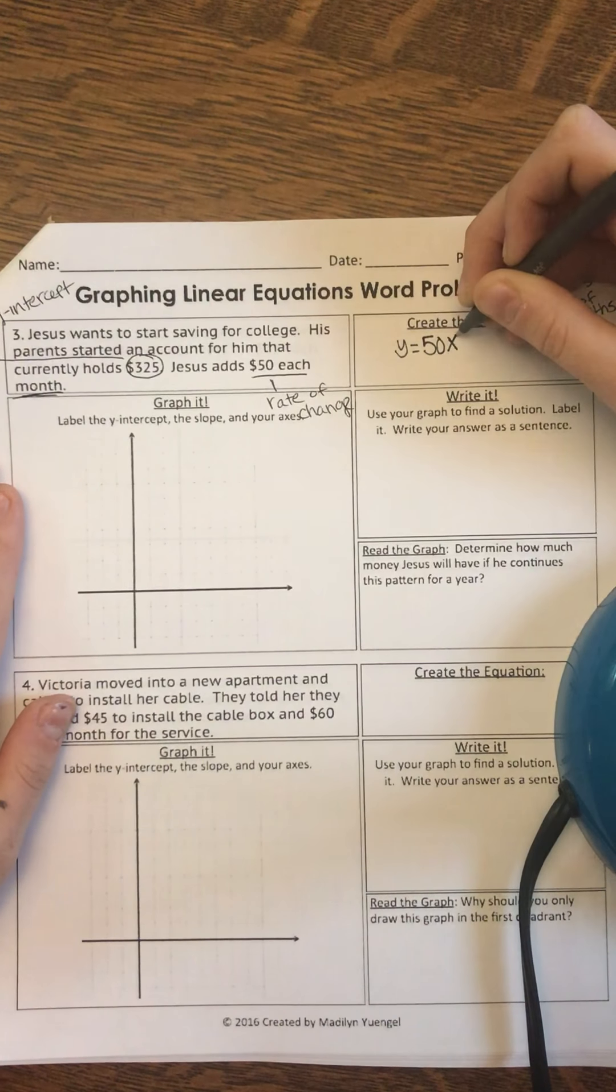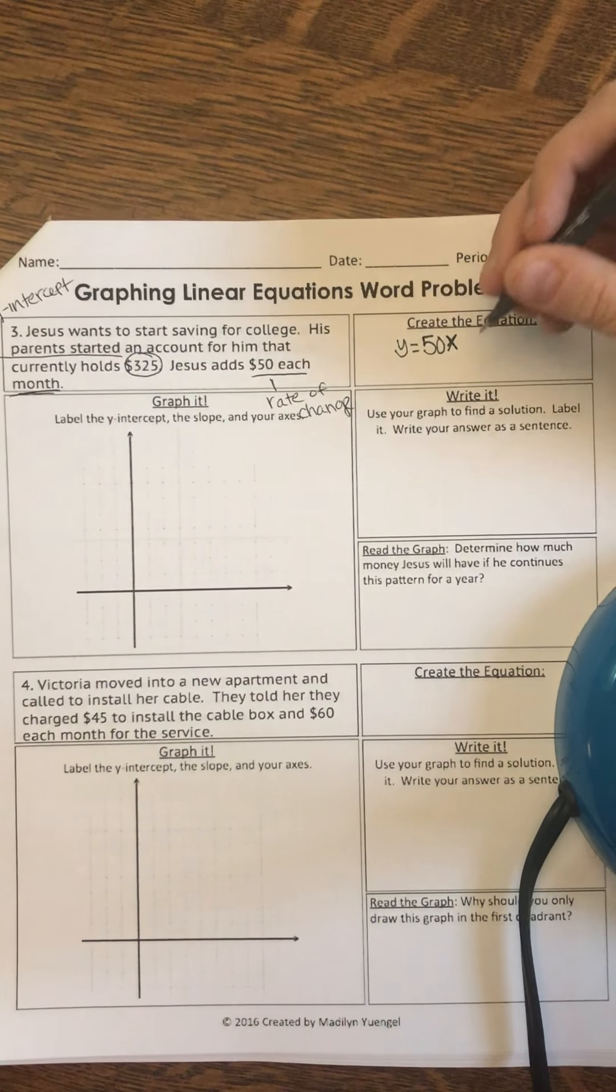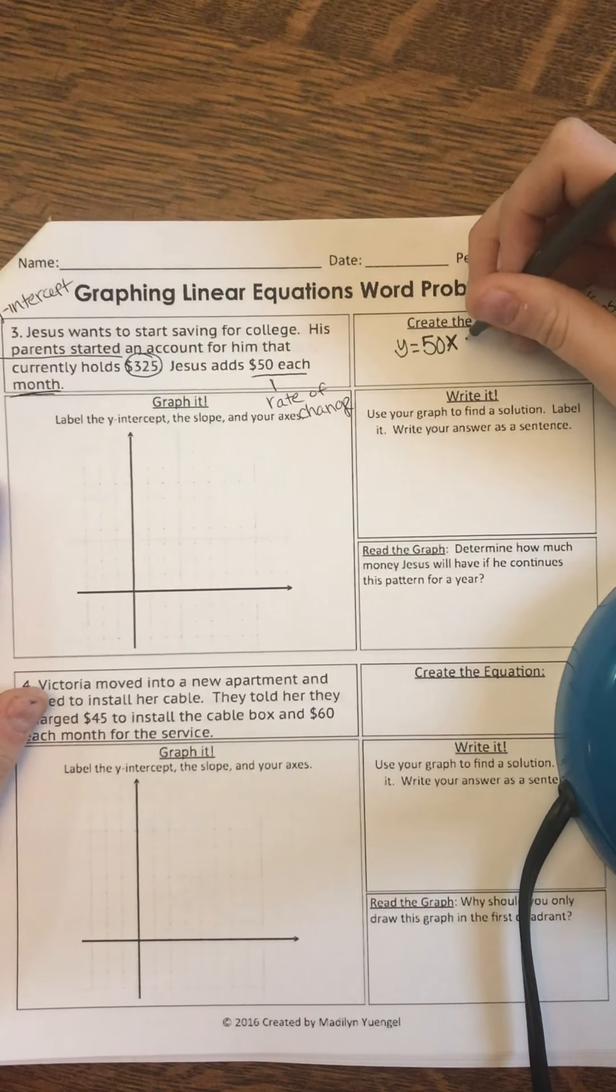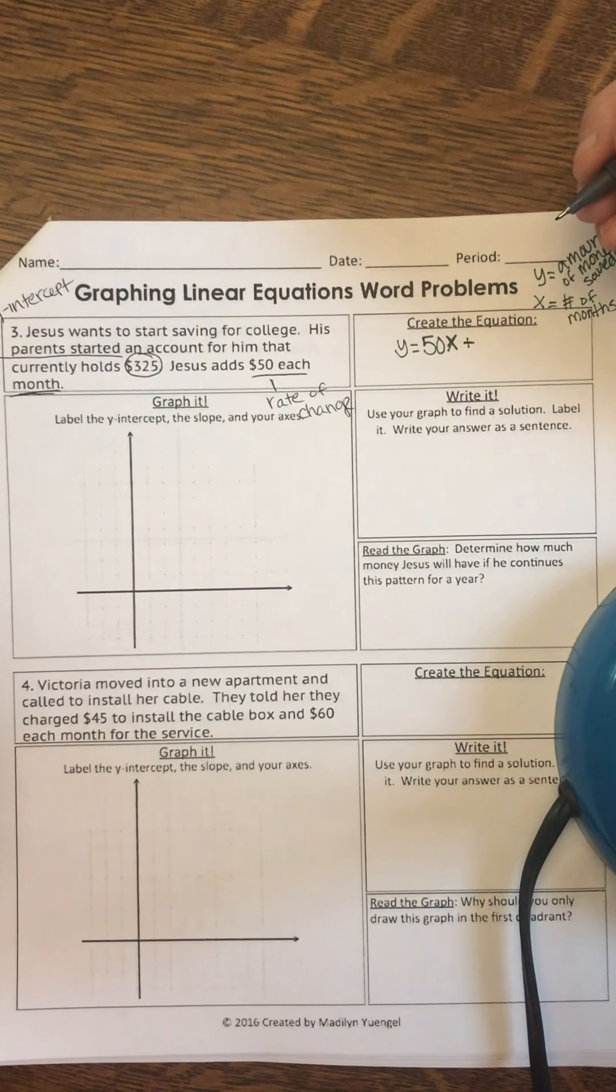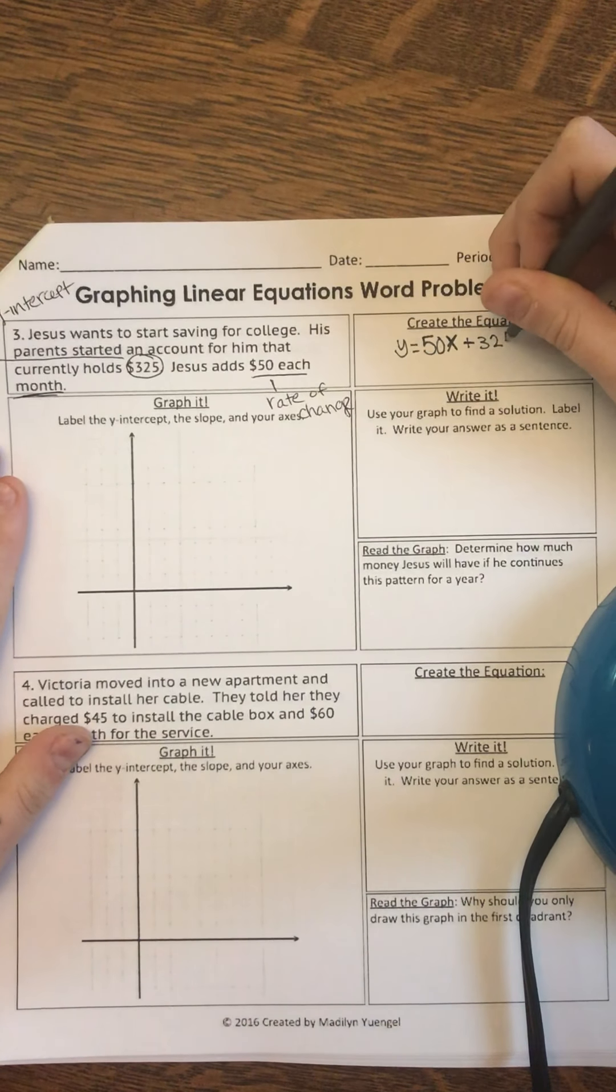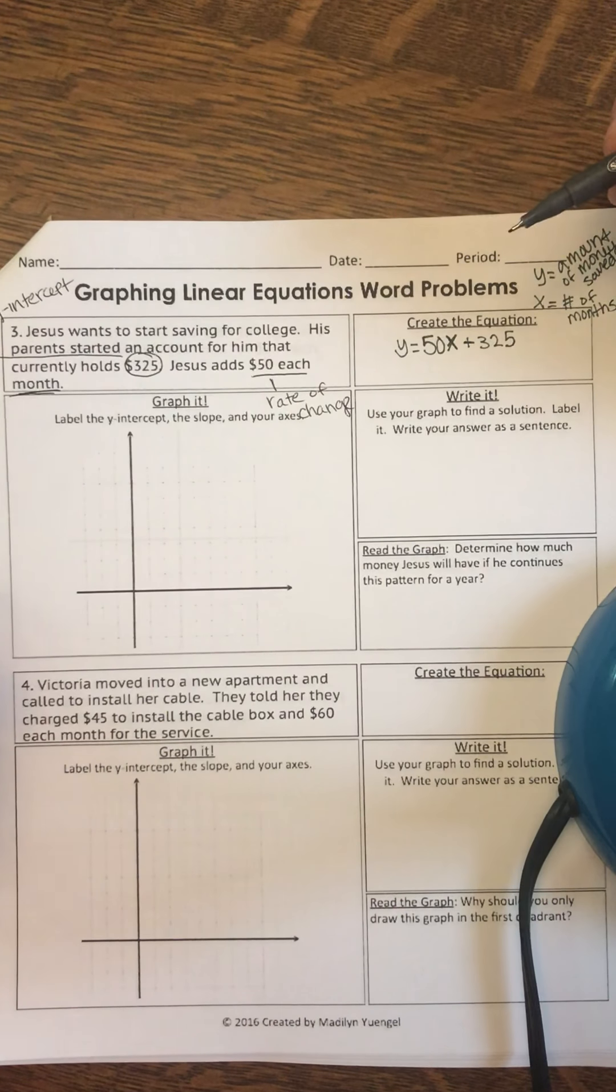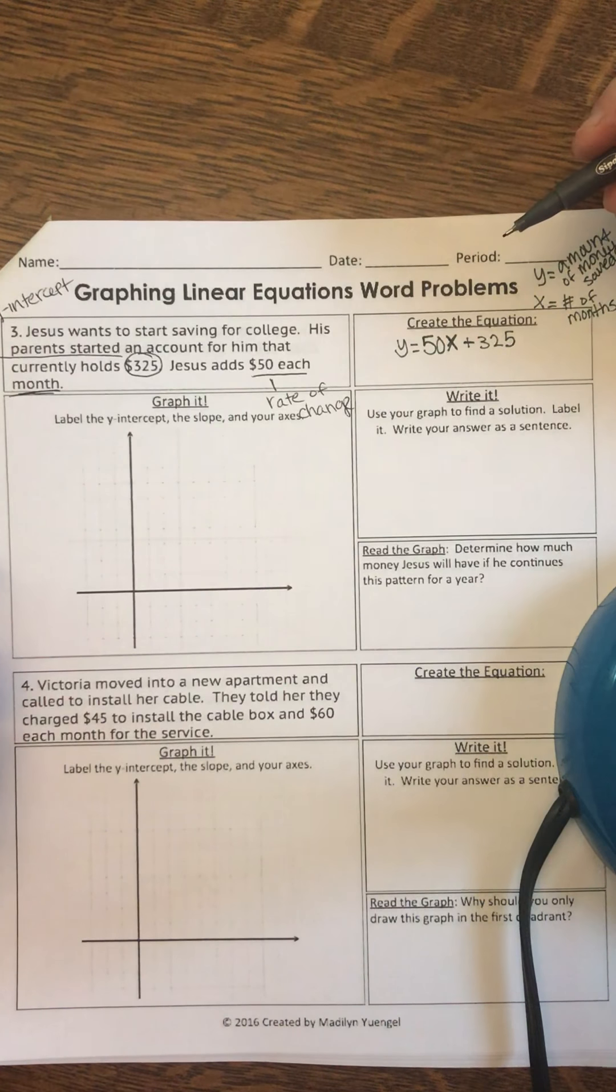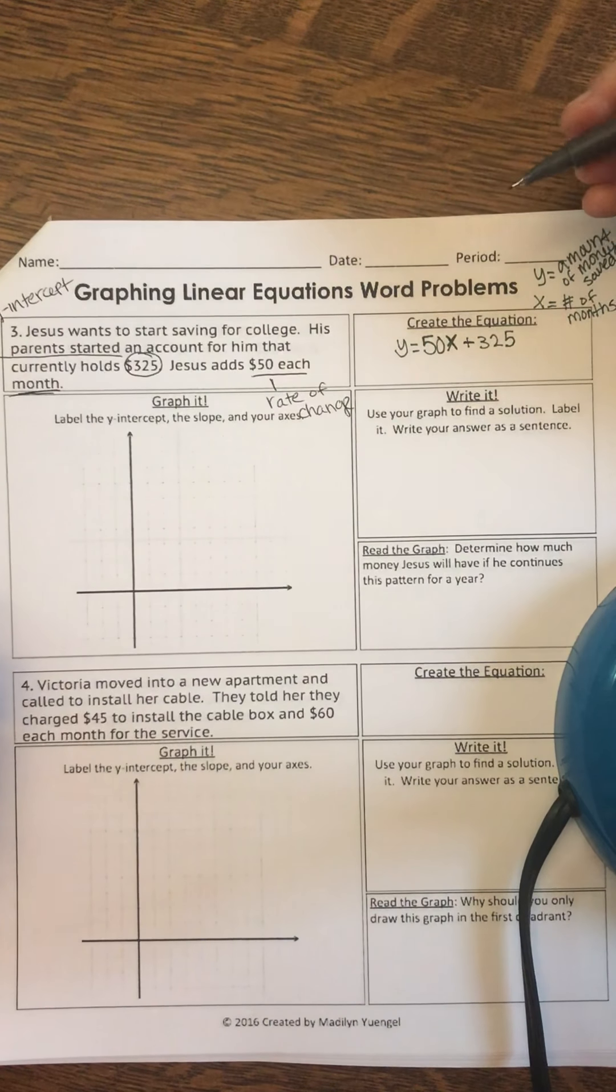And if 50 is my rate of change, 50 is my slope. But you guys were probably answering that watching the video. So it's 50X plus... What is the initial amount in my account before the $50 each month? It's $325. That is my Y-intercept. Because when X is 0, Y is $325.